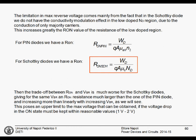Why do we have a practical limitation on the reverse voltage? The limitation comes from the fact that we do not have conductivity modulation — there are no minority carriers stored in the device to reduce the resistance. This means the on-state resistance is increased. For a PIN diode with a given thickness and area, we have a carrier concentration in the region around N2, which is about 10^17, which is the knee carrier concentration value for the reduction of mobility.